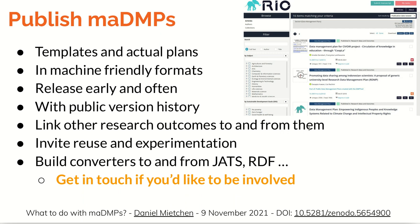If the plans are machine friendly already, we should keep that property for the publication. They should ideally be updatable — released early enough with version history made public. They should be linked to and from relevant other research outputs, and once they are public we should invite reuse and experimentation in order to explore the further possibilities and needs of the communities that engage with them.